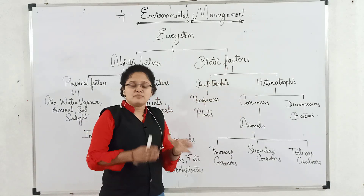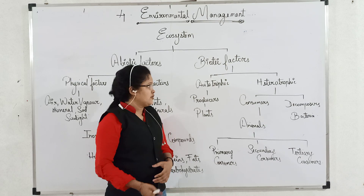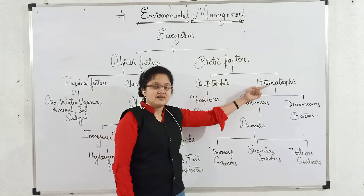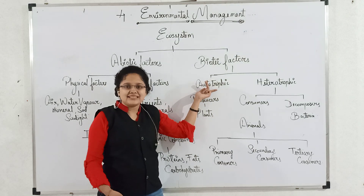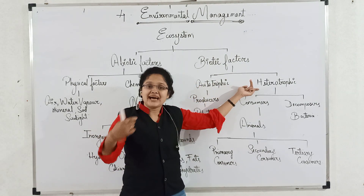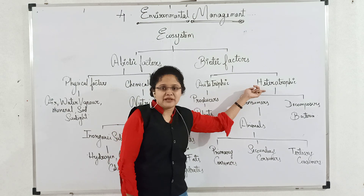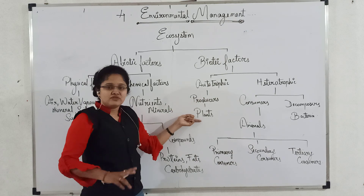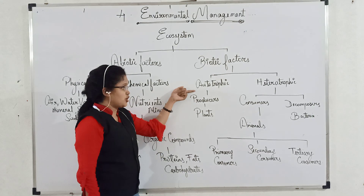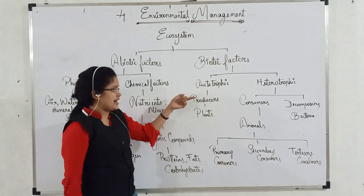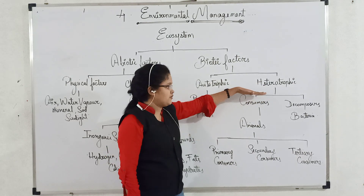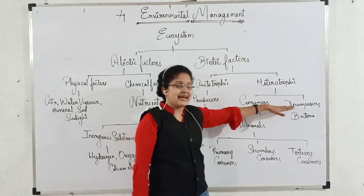Now we will look at biotic factors. Biotic factors are also called as living factors. There are two types of biotic factors: autotrophic and heterotrophic. The organisms which produce their own food are called autotrophic, and the organisms which depend on other organisms for their food are called heterotrophic. Plants are called producers because they produce their own food. Heterotrophics are classified into consumers and decomposers.